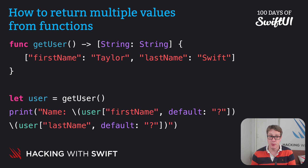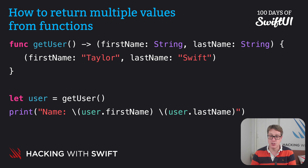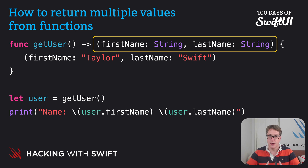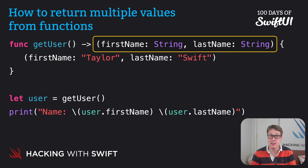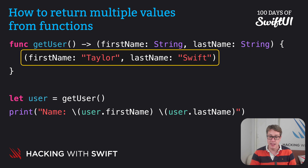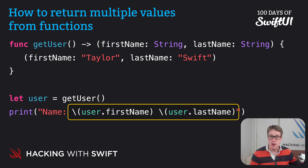We could rewrite getUser to use a tuple. We say getUser returns a tuple with firstName string and lastName string. Then inside, we return firstName Taylor and lastName Swift. At the call site, we can now say user.firstName and user.lastName. The return type is a tuple using regular parentheses. The names firstName and lastName are specific names of things inside our tuple — not in quotes — as opposed to the arbitrary keys we had in dictionaries. Swift knows the names and types we promised, so it all matches up.